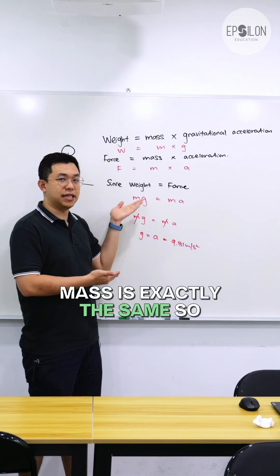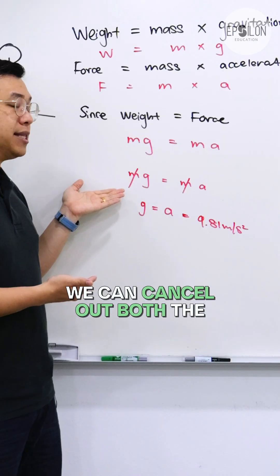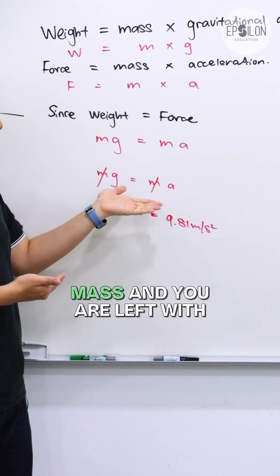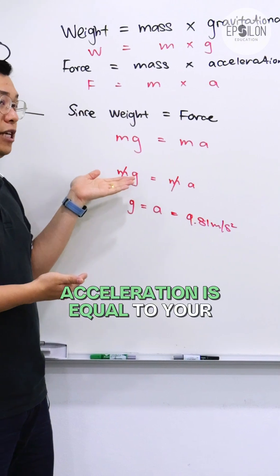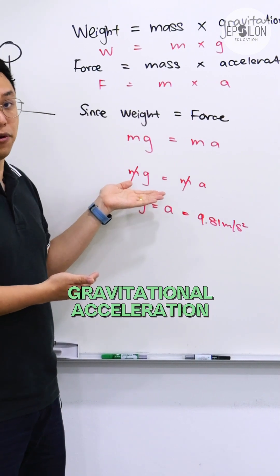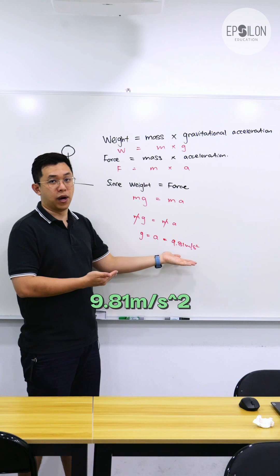So in both cases, the mass is exactly the same, so we can cancel out both the mass, and we are left with acceleration equals your gravitational acceleration. And that brings us to 9.81.